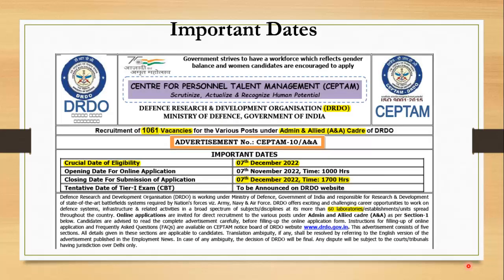Coming to the advertisement — for those who don't know about this organization, DRDO is under the Ministry of Defense and is mostly responsible for research and development in making defense products for the Indian Army, Air Force, and Navy. There are 60 laboratories in DRDO, and for working in these laboratories, some admin and related cadre is also required.